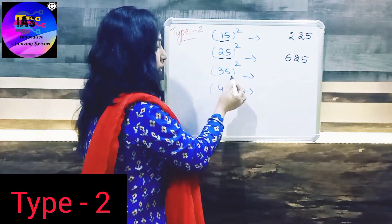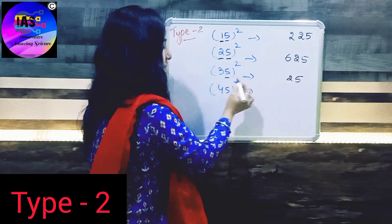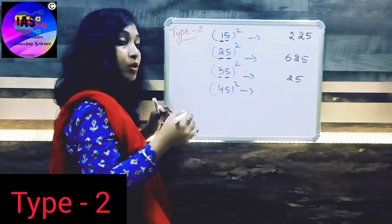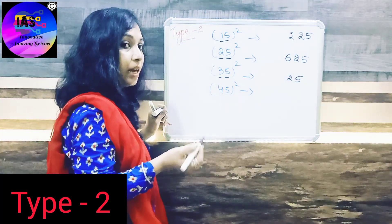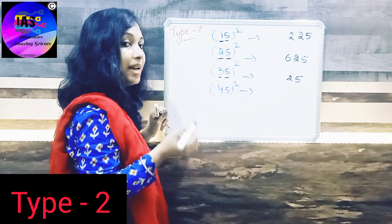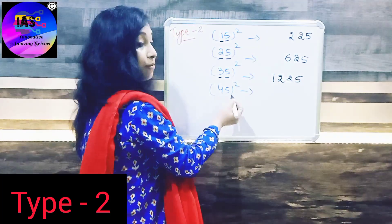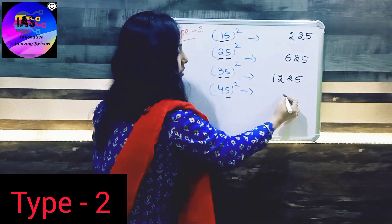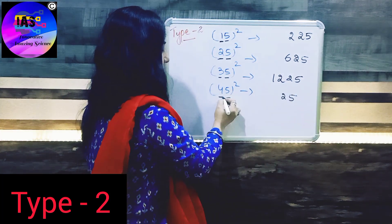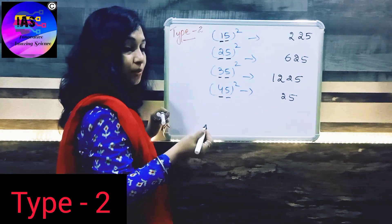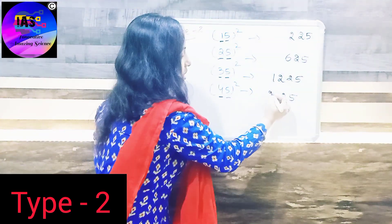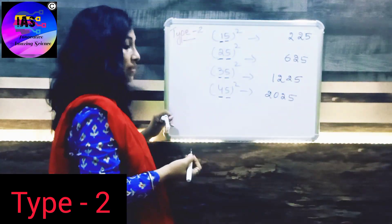Next we have 35. 5 square becomes 25, and here we have 3. The next number of 3 in a higher level is 4, and 3 into 4 is 12. And next we have 45, so 5 square is 25, and the next number of 4 is 5. 4 into 5 is 20, so 2025 is the answer.